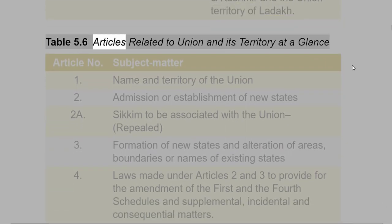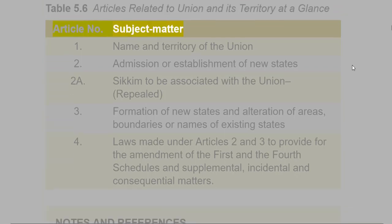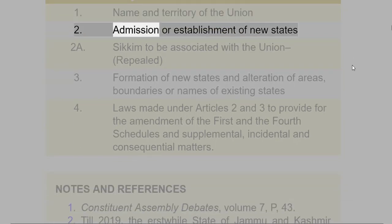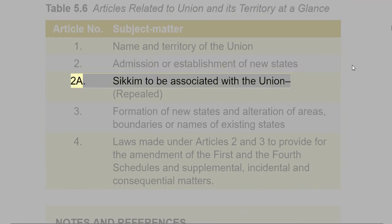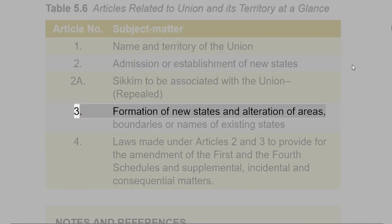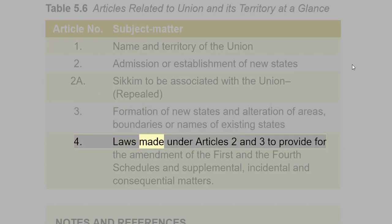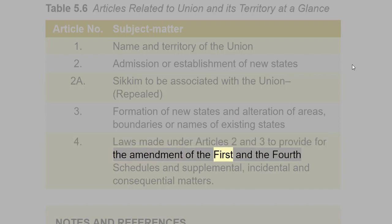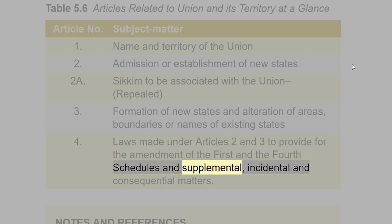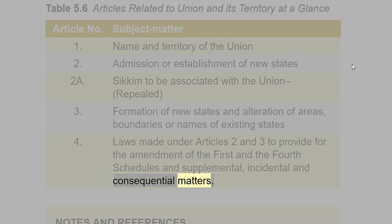Table 5.6 provides Articles related to the Union and its territory at a glance. Article 1: Name and territory of the Union. Article 2: Admission or establishment of new states. Article 2-A: Sikkim to be associated with the Union (repealed). Article 3: Formation of new states and alteration of areas, boundaries or names of existing states. Article 4: Laws made under Articles 2 and 3 to provide for amendment of the First and Fourth Schedules and supplemental, incidental and consequential matters.